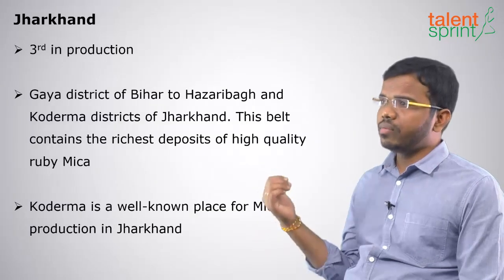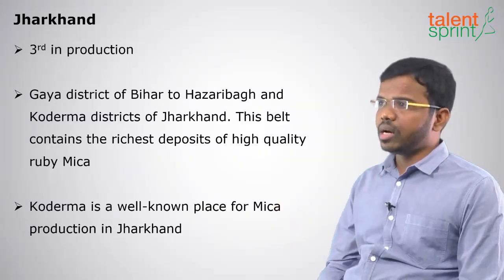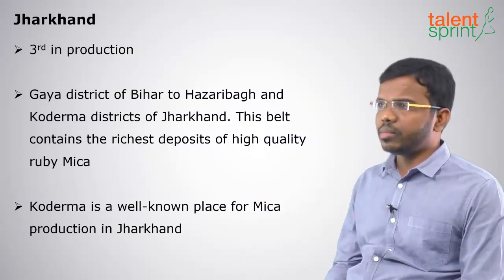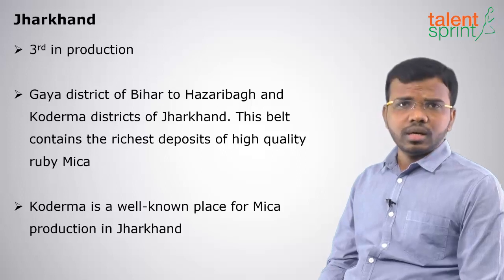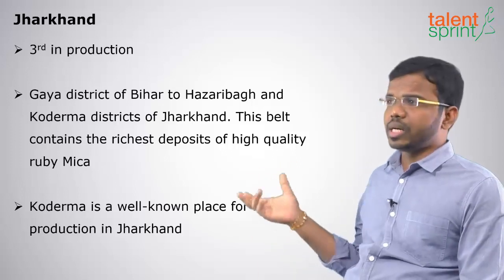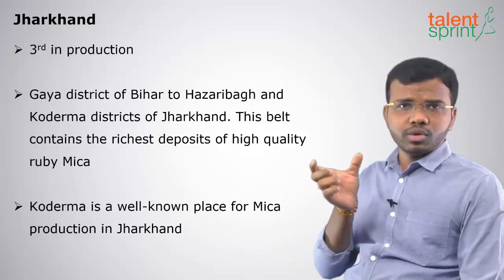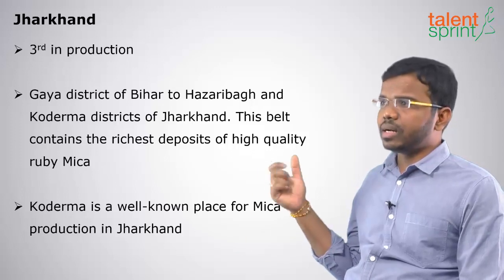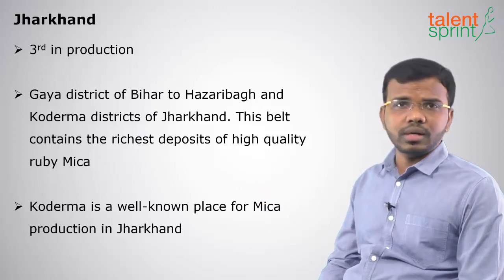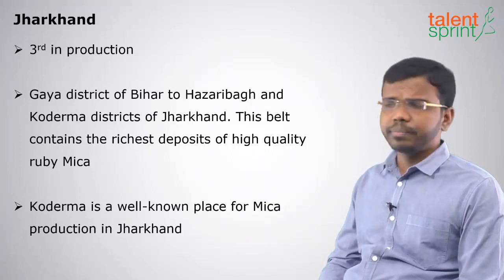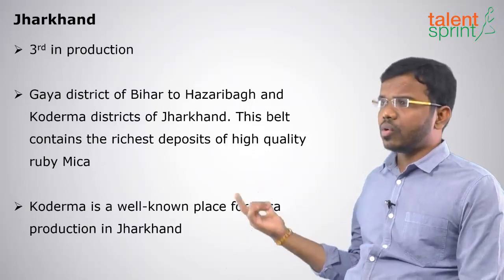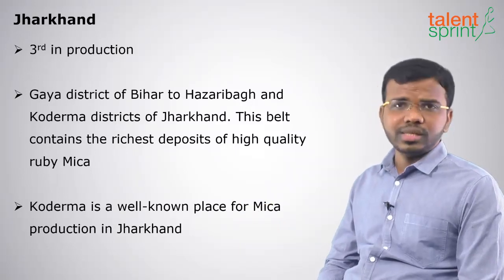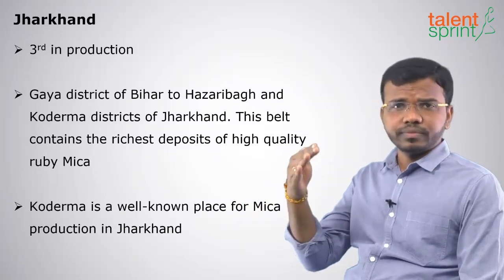The third state is Jharkhand. Here, the mica belt runs from the Gaya district of Bihar through Hazaribagh and Koderma districts of Jharkhand. This belt contains the richest deposits of high-quality ruby mica, and Koderma is a well-known place for mica production in Jharkhand.